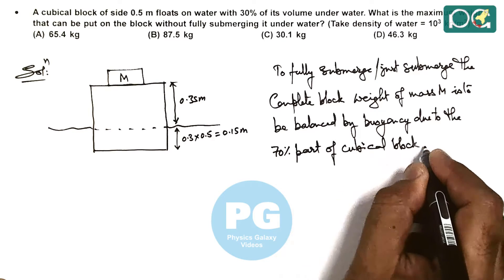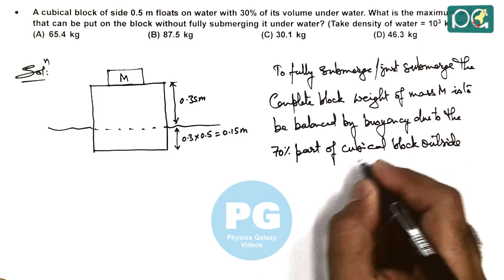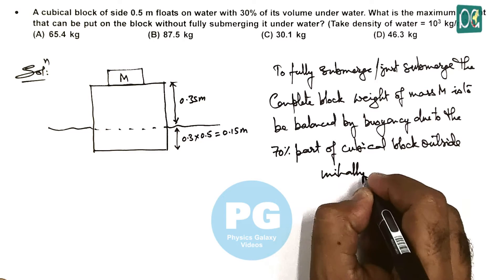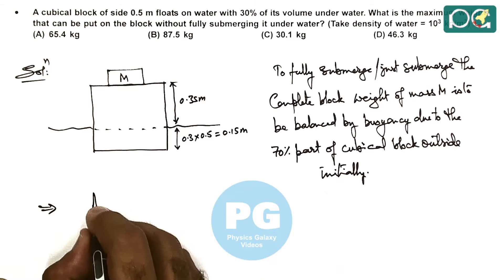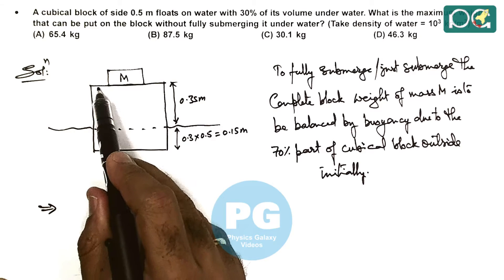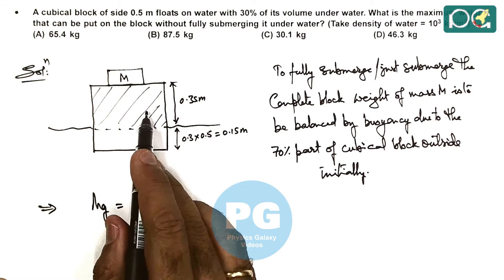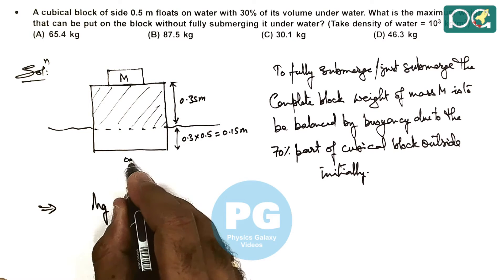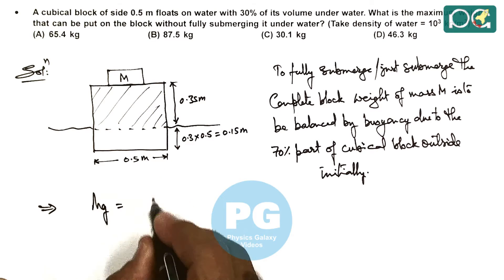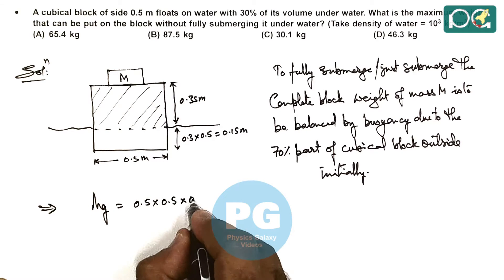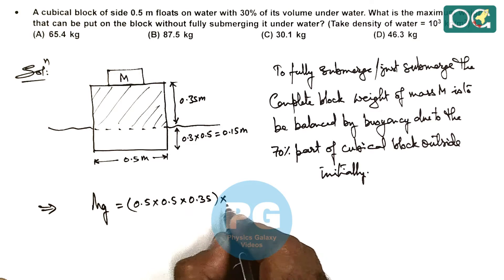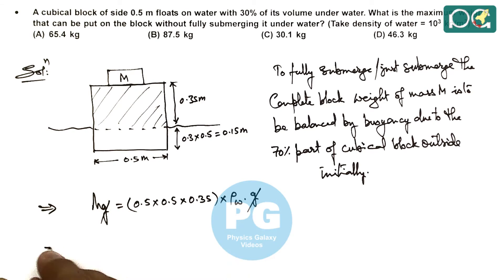This implies here we can write the weight Mg must balance the buoyancy due to the shaded part. So here the buoyancy will be: as it is of side 0.5 meter, the base area will be 0.5 multiplied by 0.5, and the height of this part is 0.35, multiplied by density of water times G. Here G gets cancelled out. Simplifying, we are getting mass to be 0.25 multiplied by 0.35 multiplied by 10 to the power 3.